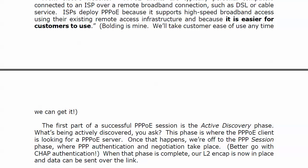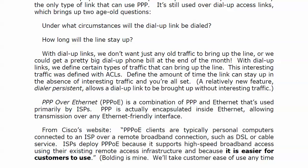It's one of these topics just touched on in the CCNP route exam, but I want you to know what the phases are. The first phase of a successful PPPoE session is the active discovery phase — this is when your client is looking for a PPPoE server. Once that happens, we're off to the session phase, where PPP authentication and negotiation take place. I wouldn't use PAP. When that phase is complete, our Layer 2 encapsulation is in place and data can go over the link.